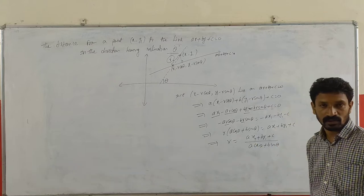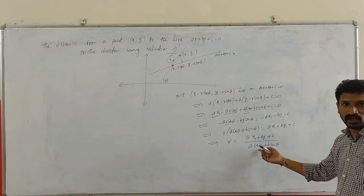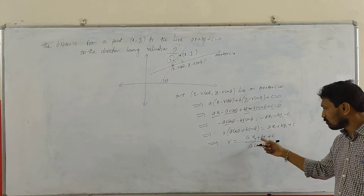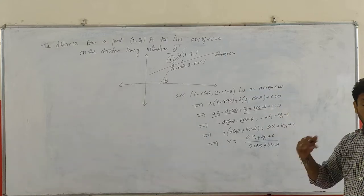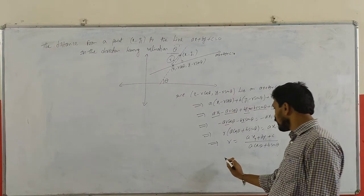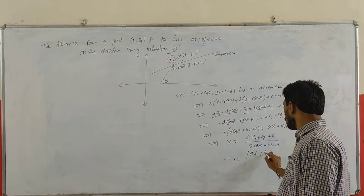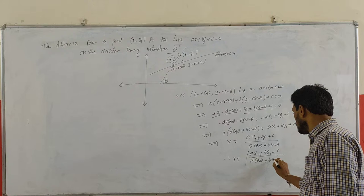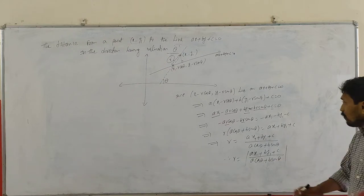Sometimes, according to theta, you may get negative terms in cos and sin. Also, when you substitute x1, y1 in the given equation, you may get negative terms. So to avoid negative terms, we take the modulus: r = |Ax1 + By1 + C| / (A cosθ + B sinθ). This is the formula.